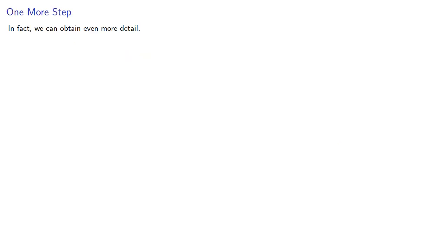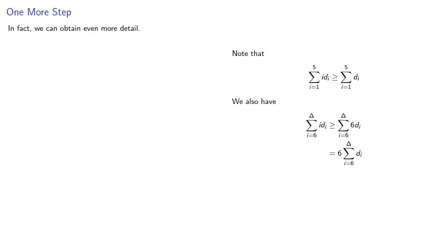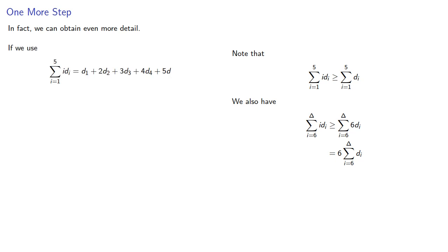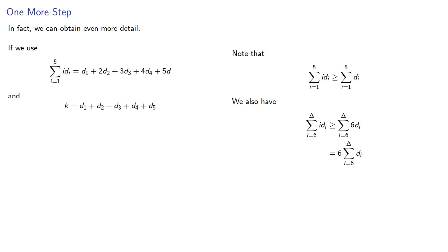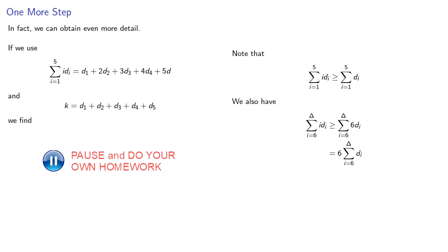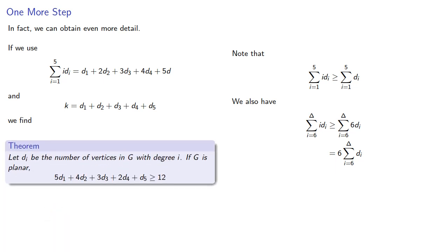In fact, we can obtain even more detail. While we used the inequality that the first part of the sum was greater than or equal to the sum of the number of vertices of degree 5 or less, it's a finite sum with a definite cap so we can write it out explicitly. Recall that k was the number of vertices of degree 5 or less — that's just the sum d1 through d5. So with a little bit of algebra, letting d_i be the number of vertices in our graph with degree i, if g is planar then 5d1 + 4d2 + 3d3 + 2d4 + d5 must be greater than or equal to 12.